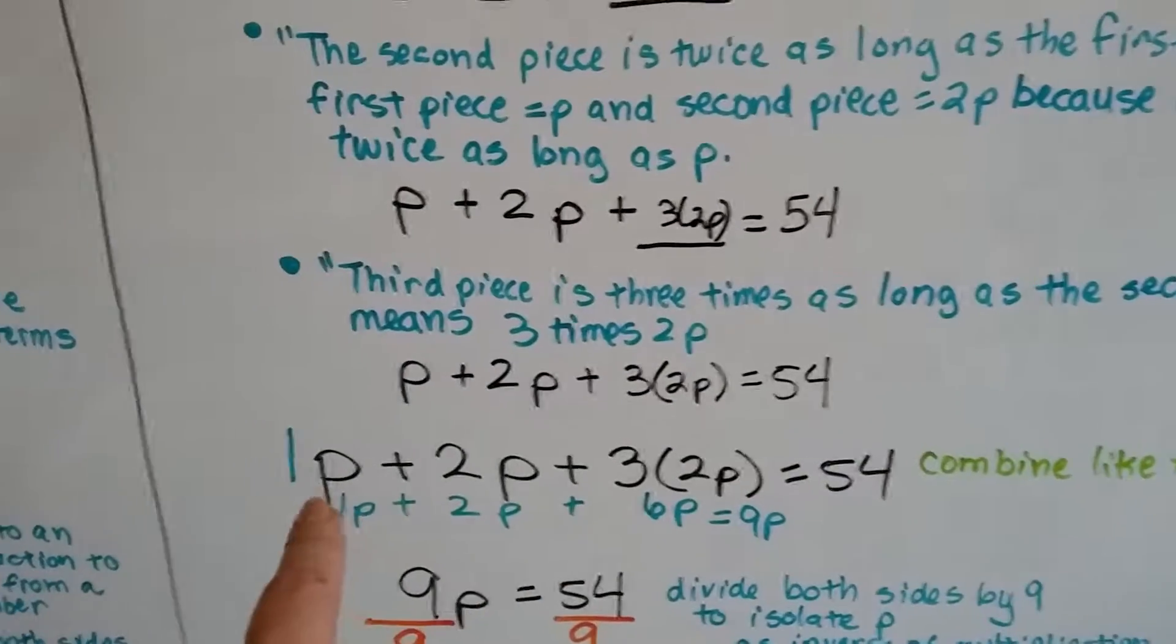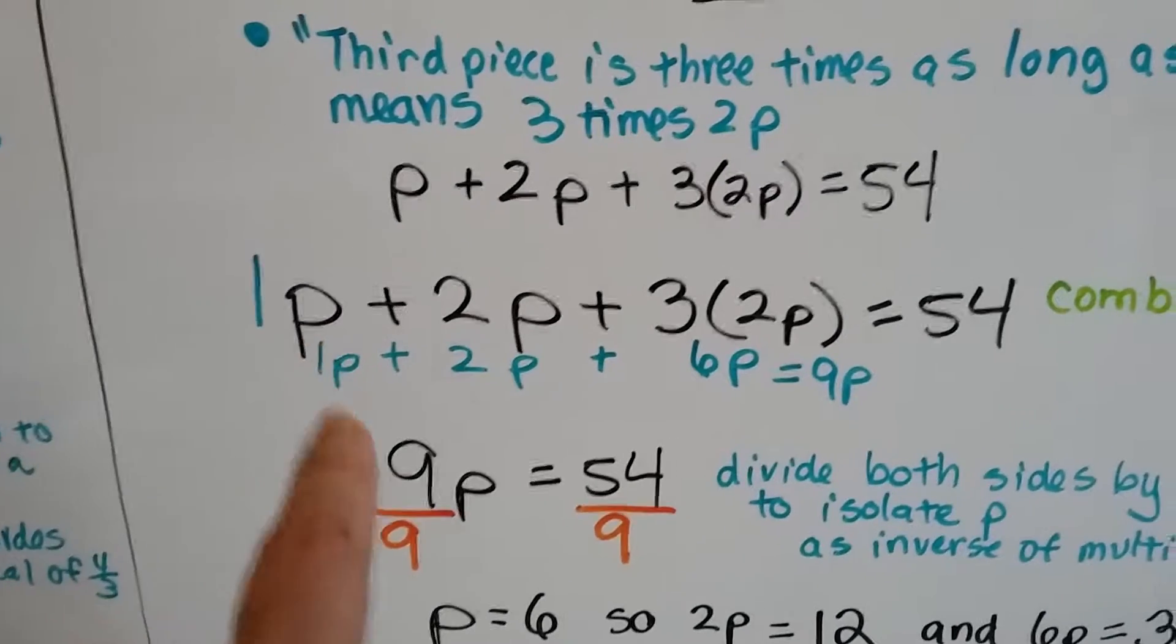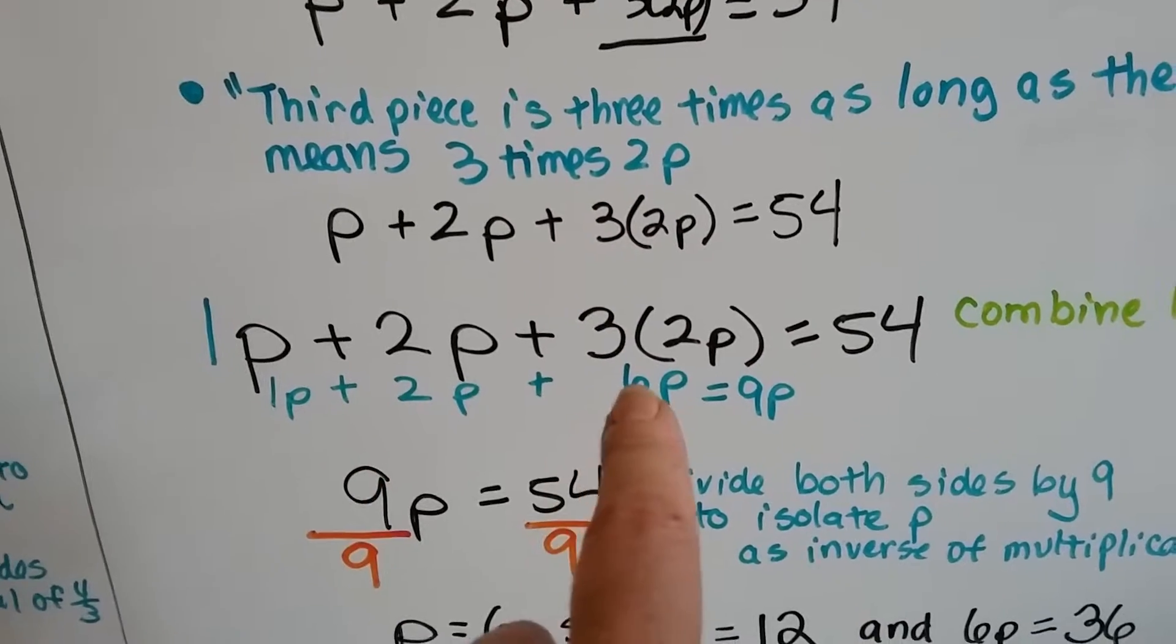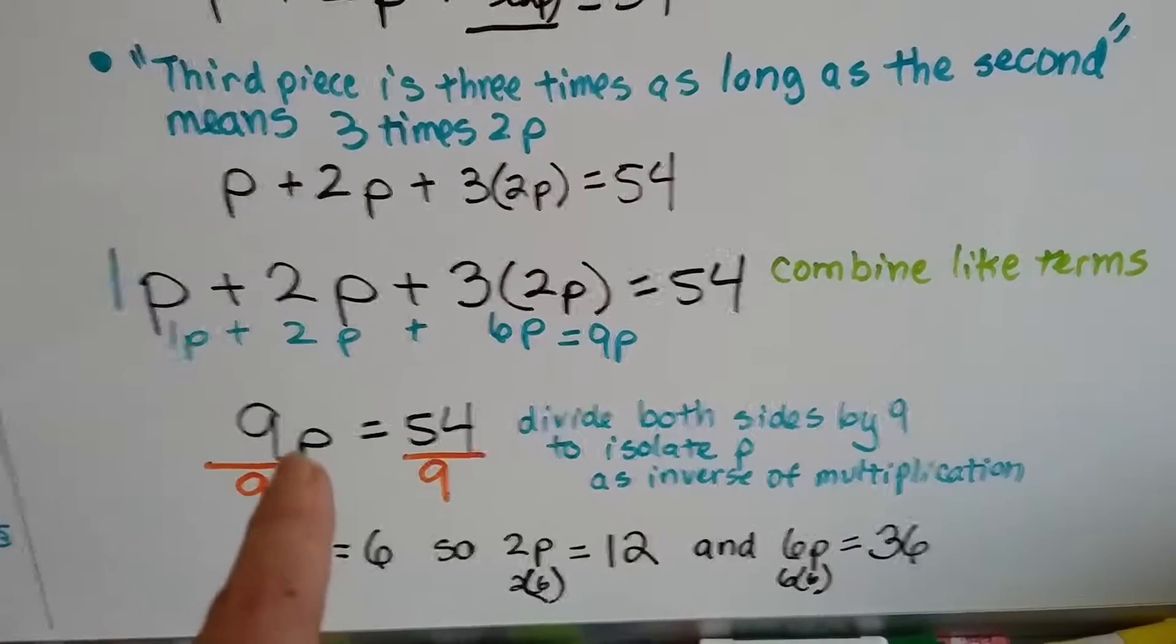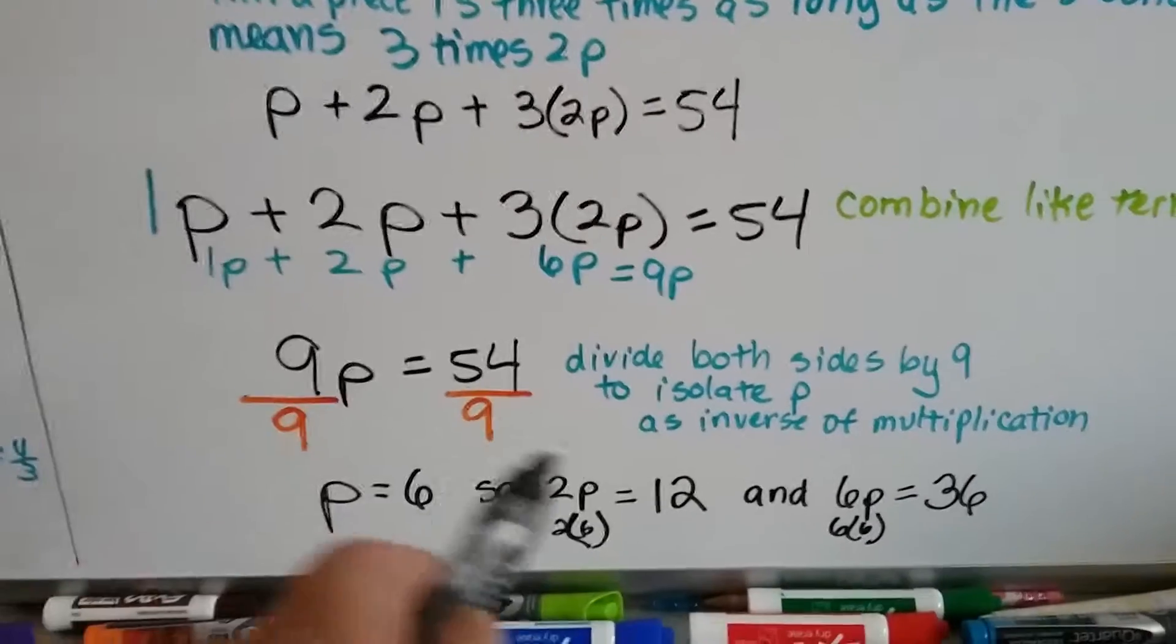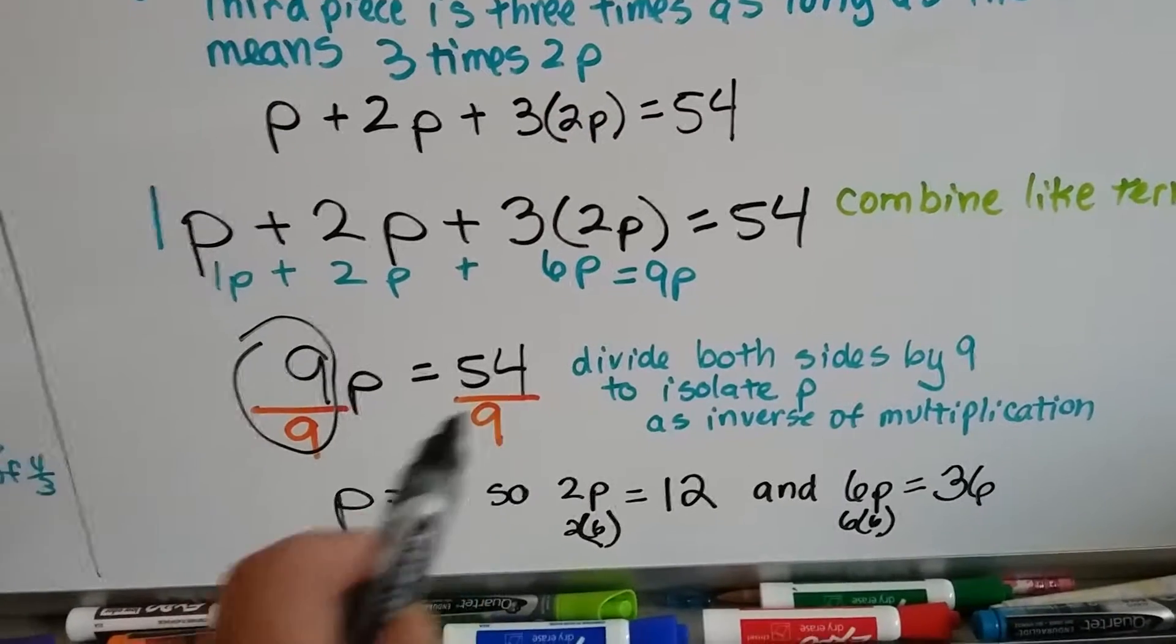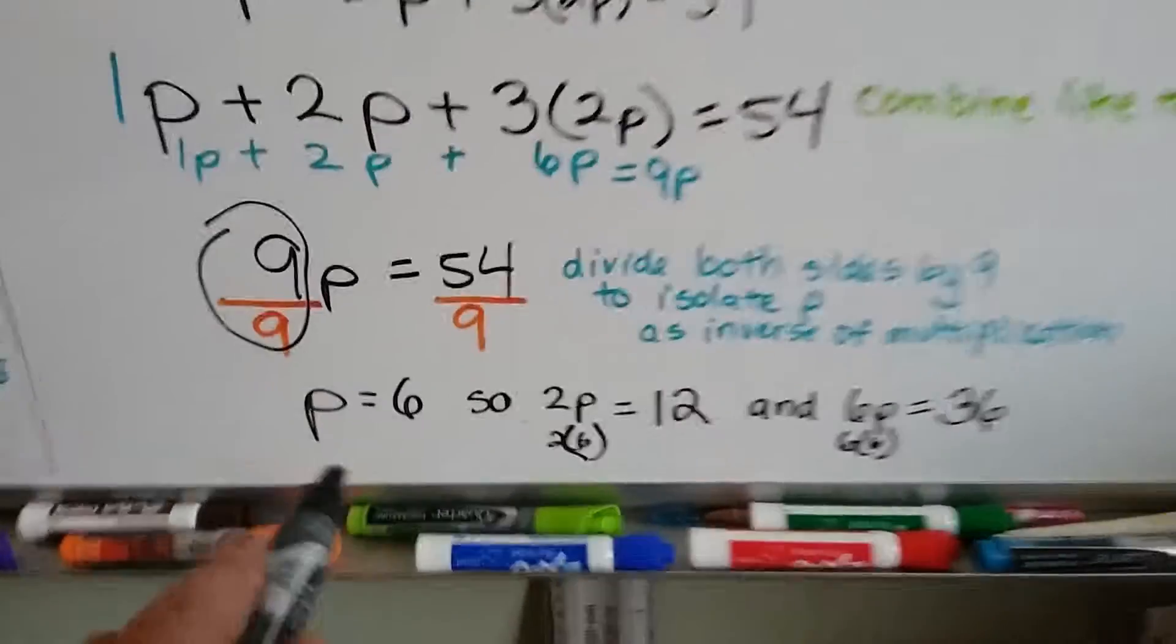Now we need to combine the like terms. Look at all these P's here. There's an invisible one in front of this one, so we've got 1P plus 2P plus we need to do this multiplication. Three times two is six, so we've got 6P. How many P's do we have? We've got one and two is three, and six is nine. So now we've got 9P equals fifty-four. We divide both sides by nine to isolate this P by itself. Nine over nine means one, so we just have one P. Now P equals fifty-four over nine. Nine times six is fifty-four, so we know P is six.